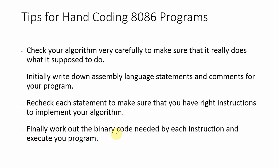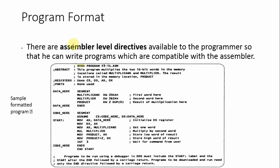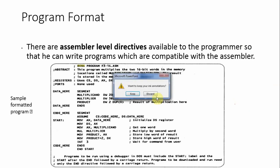When writing programs for use with an assembler, the assembler converts your code to a .obj file and allows you to refer to data items by name rather than their offsets. So that is how you write the program so it can be used by the assembly program format. In the next lecture, we will go into further description of this topic. If you have any queries related to this lecture, you can ask me.